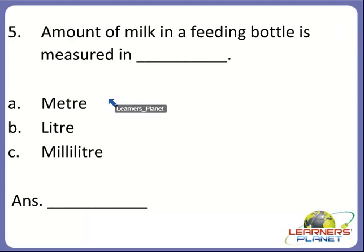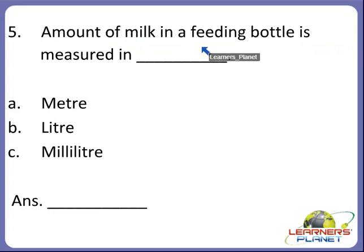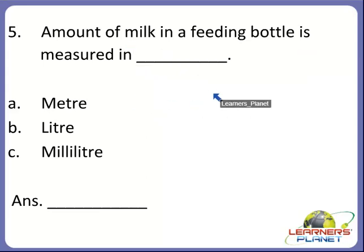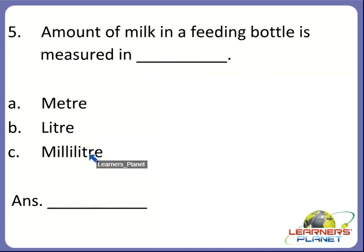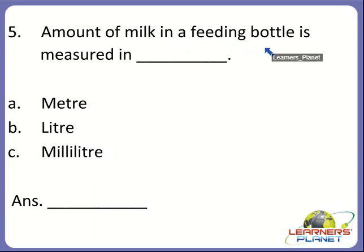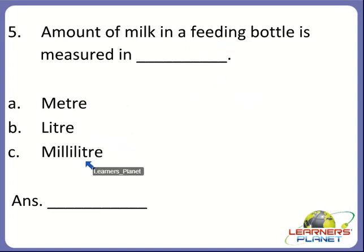Now the next one. Amount of milk in a feeding bottle is measured in dash. In what is it measured? Is it meter, liter, or milliliter? The amount of milk in a feeding bottle — a feeding bottle is very small — so it is measured in milliliter. So C is the correct answer.